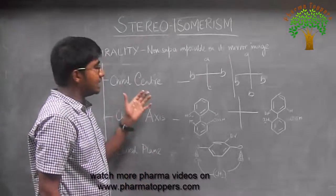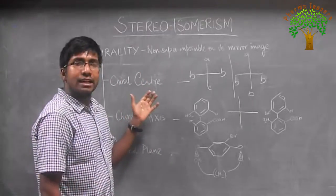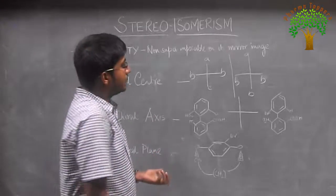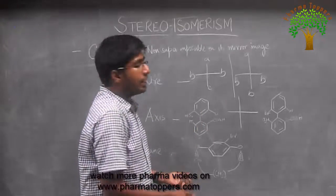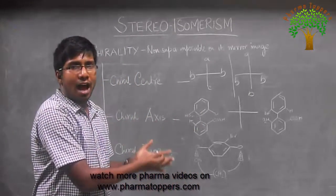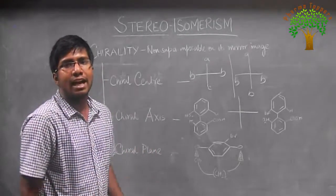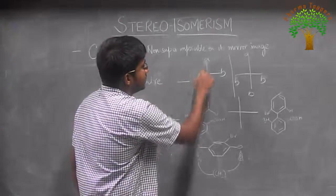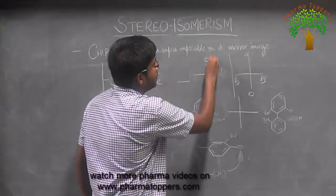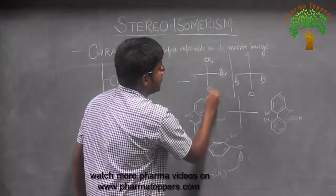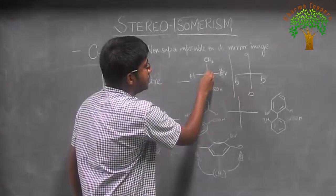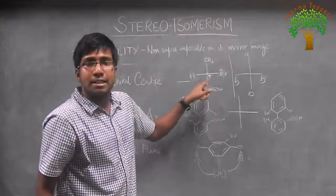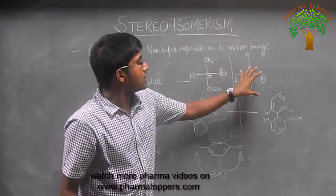What is a chiral centre? A chiral centre is actually responsible for chirality. A chiral centre is also known as an asymmetric centre. An asymmetric centre is a carbon atom that has 4 different groups attached to it. For example, suppose we have a methyl group, a bromide group, a carboxylic acid group, and a hydrogen all attached to one carbon — that carbon is a chiral carbon, marked with a star. This represents chirality at that centre because it has a non-superimposable mirror image.